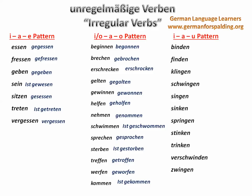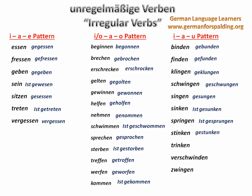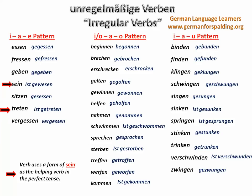Our last group changes to a U in the past participle: binden → gebunden; finden → gefunden; klingen → geklungen; schwingen → geschwungen; singen → gesungen; sinken → gesunken; springen → gesprungen; stinken → gestunken; trinken → getrunken; verschwinden → verschwunden; und zwingen → gezwungen. Remember the verbs that use sein when forming the perfect tense with those verbs.